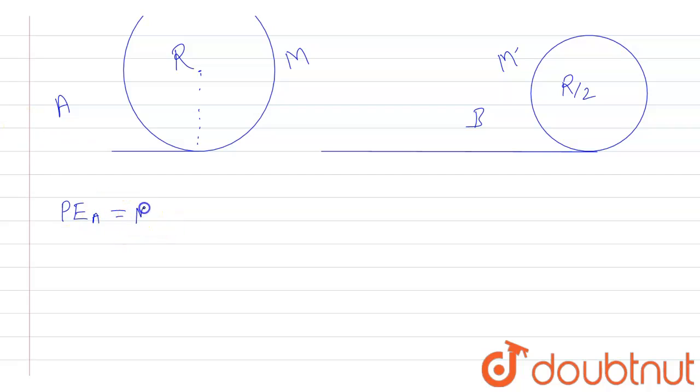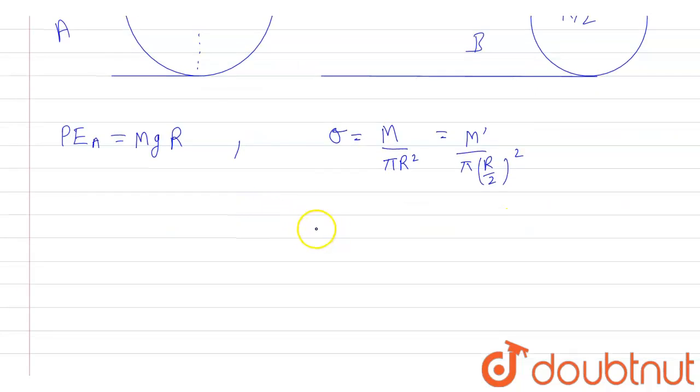Now in this case some mass has been unfolded and it is lying on the ground. So with that we can say that M dash will be different. Now since both are uniformly distributed mass, we can say that sigma will be same for both cases. So that means sigma is equal to mass by area, that means M by pi R square. Similarly sigma for this one will be mass by area, that means mass is M dash and area is pi R by 2 whole square. So from this we can say that M dash